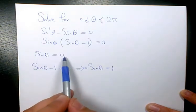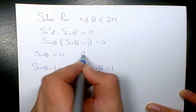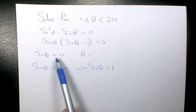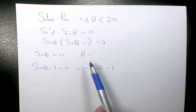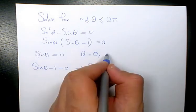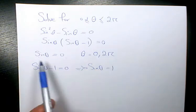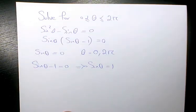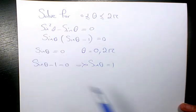Now, sinθ = 0. What theta values result in sinθ = 0? We know that sin(0) and sin(2π) equal 0. So sin(0) = 0 and sin(2π) = 0. These are the two answers for the first equation.